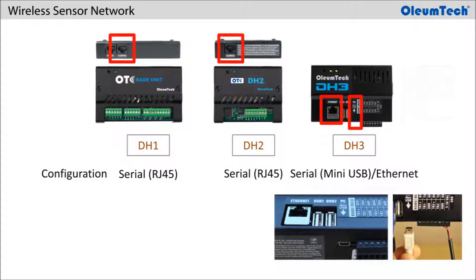The DH1 and DH2 are programmed over serial RJ45 connection. The DH3 can be programmed through its mini-USB port or through the Ethernet port locally or remotely.